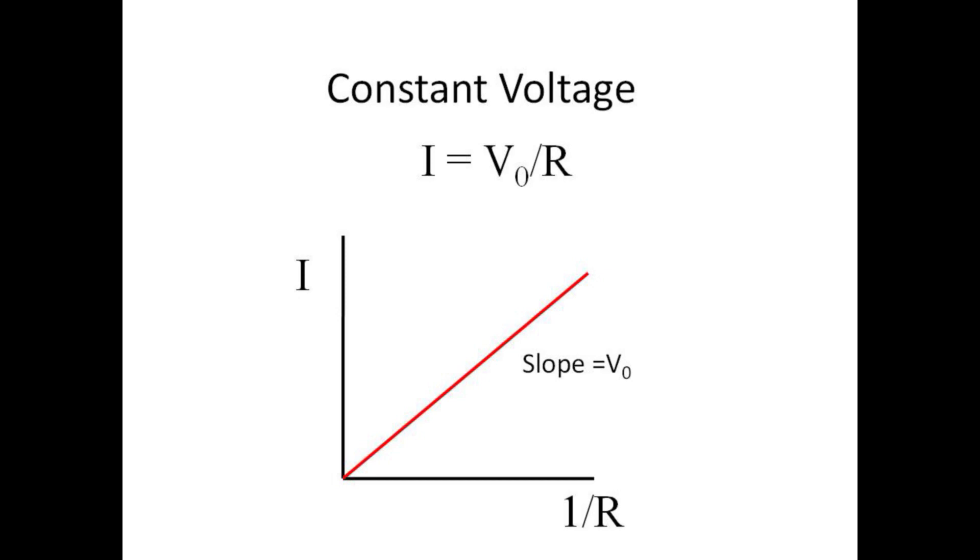The strategy in this next section is to keep the voltage fixed at 10 volts and substitute different values of resistance to see what current results. A graph of current versus the inverse of R should be a straight line with a slope equal to the constant 10 volts.